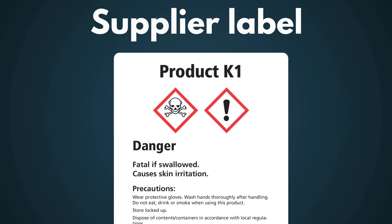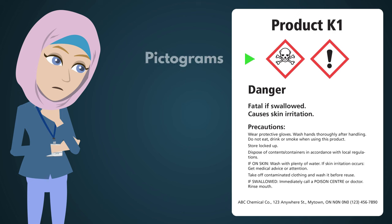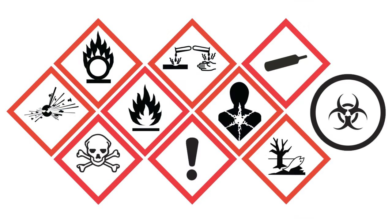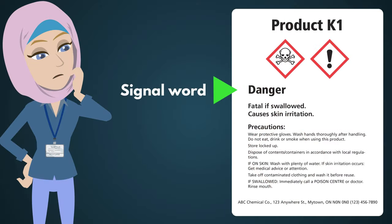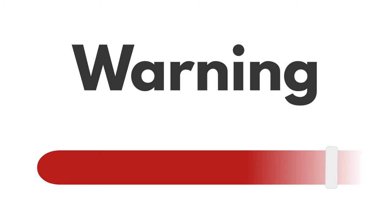A supplier label is from the company that makes or supplies the product. A supplier label has six parts: the name of the product; pictograms, which are symbols that show you the hazards; and a signal word, which tells you how severe the hazard is. Danger is for more severe hazards, while warning is for less severe hazards.